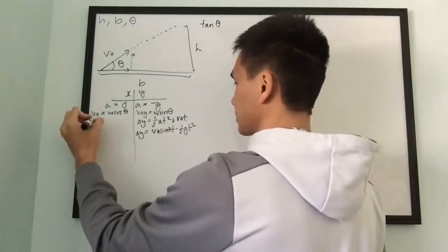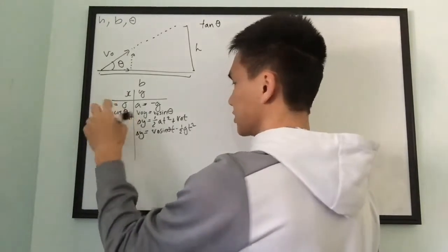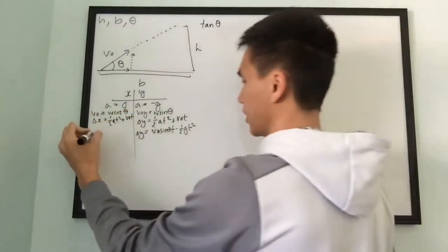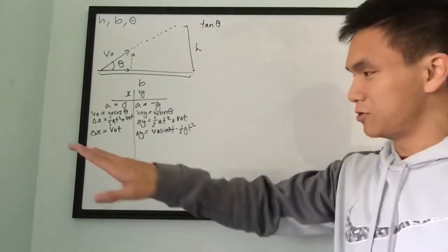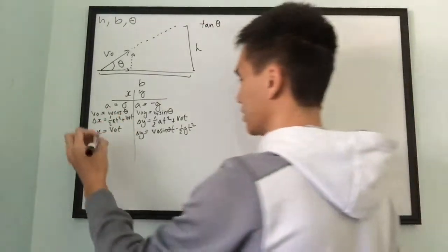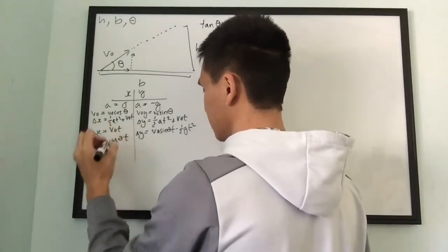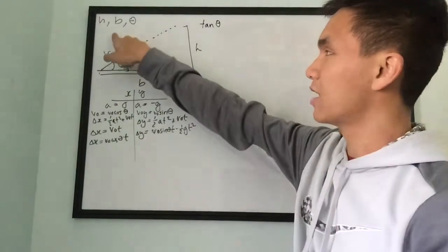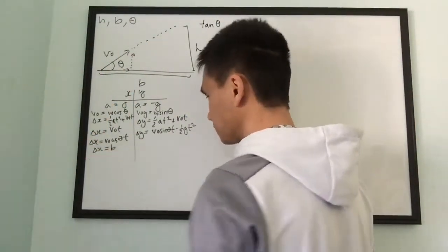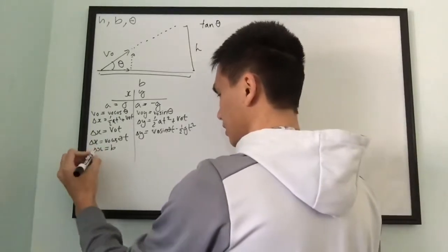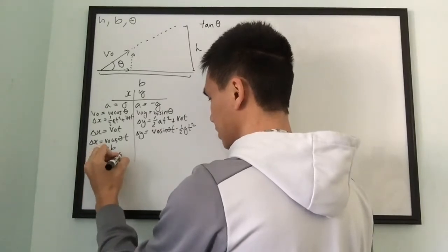In the x-direction, delta-x equals one-half a·t² plus v-naught·t. Since acceleration is zero, that whole term goes away, leaving delta-x equals v-naught cosine theta · t. We were also given that it travels a horizontal distance b, so delta-x really equals b. We plug in b for delta-x: b equals v-naught cosine theta · t.